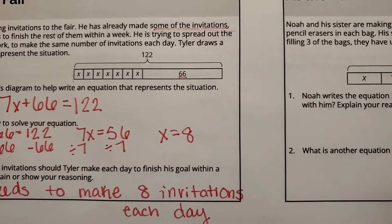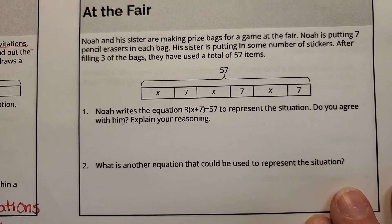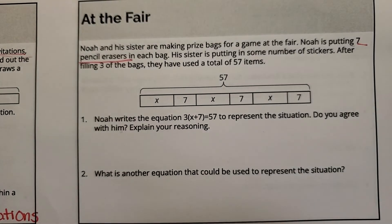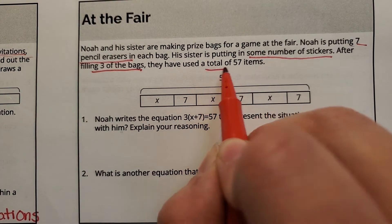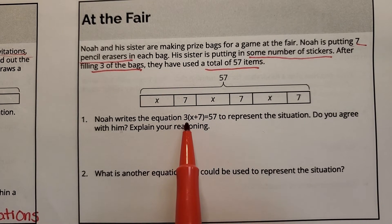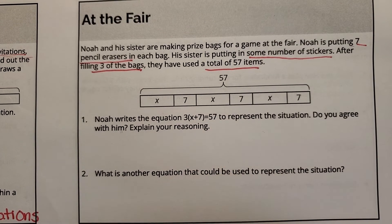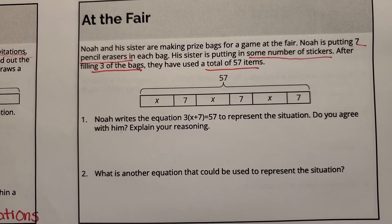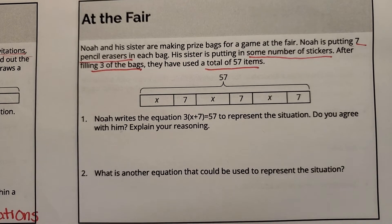Let's move on to the next part of this task — Noah and his sister. Noah and his sister are making prize bags for a game at the fair. Noah is putting 7 pencil erasers in each bag, and his sister is putting some number of stickers in each bag. After filling 3 bags, they used a total of 57 items. Noah writes the equation 3(x + 7) = 57. Do you agree with him? Explain why. And what could be another equation to represent the situation? Pause and try this problem.